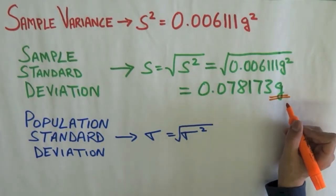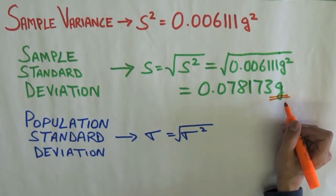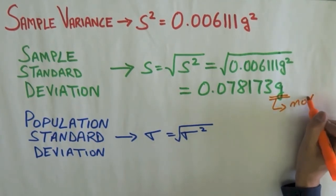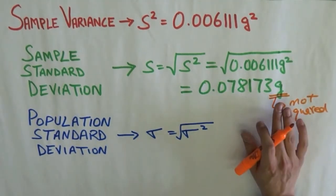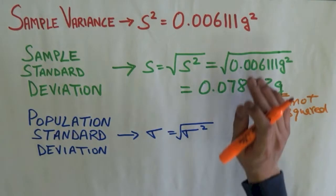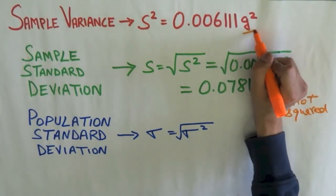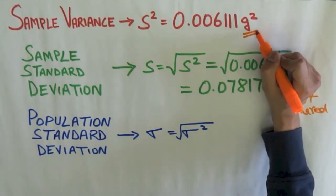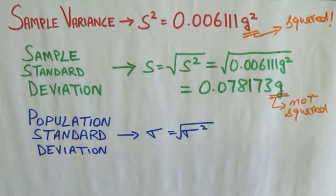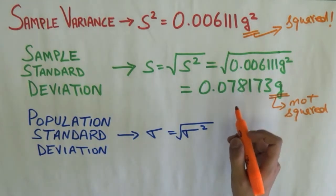In case of sample standard deviation, my units are not squared. And my units match with the ones of data. But in case of sample variance, my units are squared. And they do not match the units of my sample data.